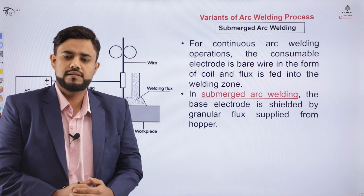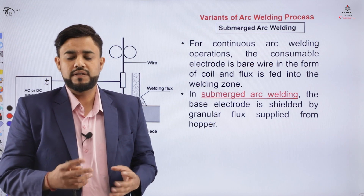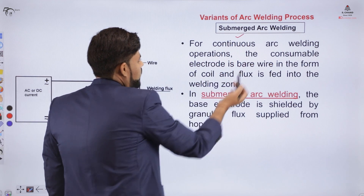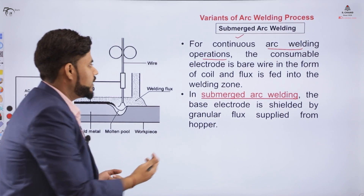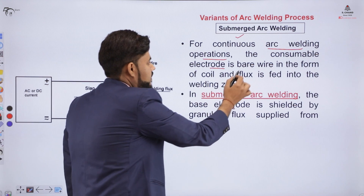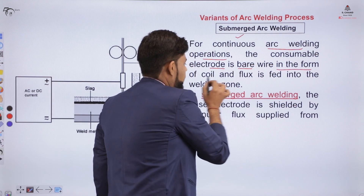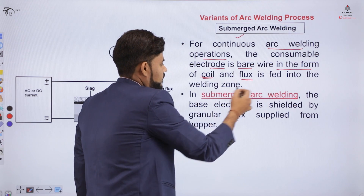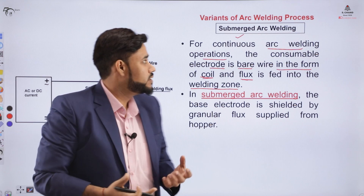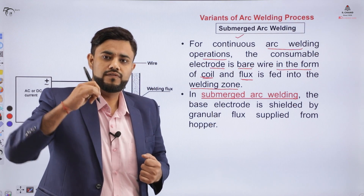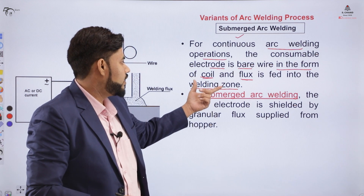The next variant is submerged arc welding. As the name suggests, the arc is submerged under something. In submerged arc welding there is a continuous arc welding operation using a consumable bare electrode — that is, a wire with no coating. We feed the bare wire in the form of a coil and feed flux into the welding zone. This process is majorly used for continuous welding operations.